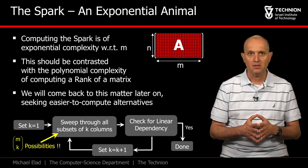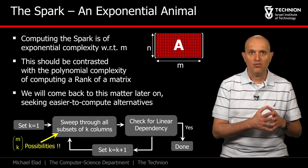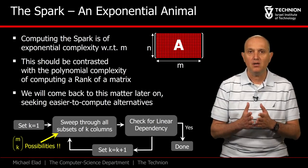So, just to make it clear, spark is not something easy to obtain, and we will come back to this difficulty later on. At the moment, we proceed with the assumption that for a given matrix A, its spark is known to us. Let's meet a few properties of the spark in order to better understand it and its role in our story.